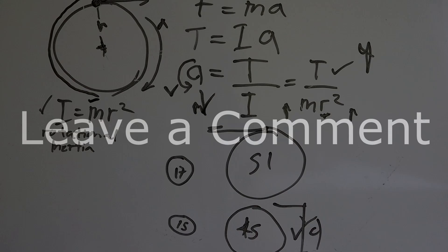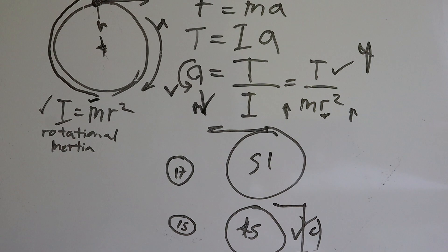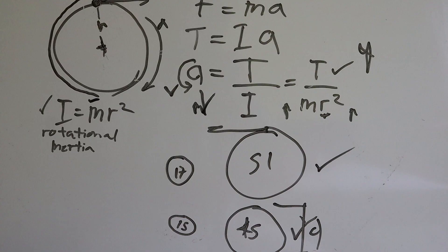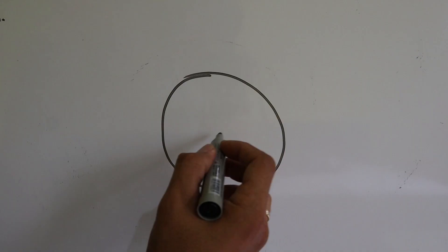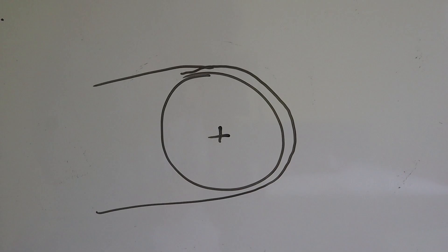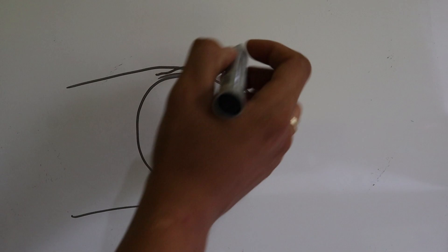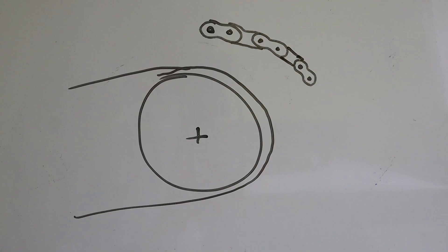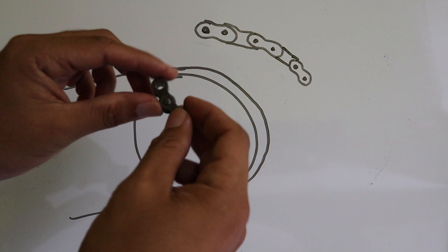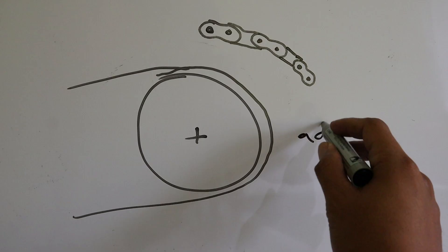Ngayon, i-discuss natin kung ano raw ang advantage nito. Meron siyang advantage, kaibigan. Meron daw advantage ang larger sprocket. Ang kanilang tinutukoy ay ang Newton's third law of motion. Ang nasasabi rito, in every action, there is an equal opposite reaction. In our case, kung ang ating object ay nag-exert ng force papunta dito, meron ding friction na nag-act papunta dito. Yan lamang ang ibig sabihin ni Newton.